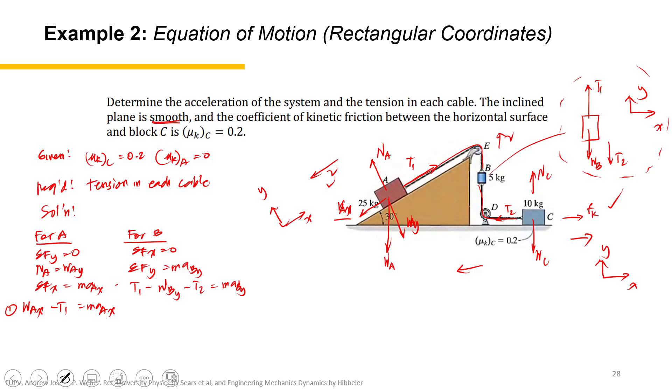So this is equation 1, this is equation 2. So for C, we have first summation of forces along Y is 0. N_C equals W_C. Next, we have summation of forces along X is not equal to 0, but M_A C_x. So the forces are T2 minus F_K equals M_A C_x. And let's just finalize this equation. We know that F_K is mu_K N. Mu_K, of course that's for C. And the N here is W_C. So this is equation 3.